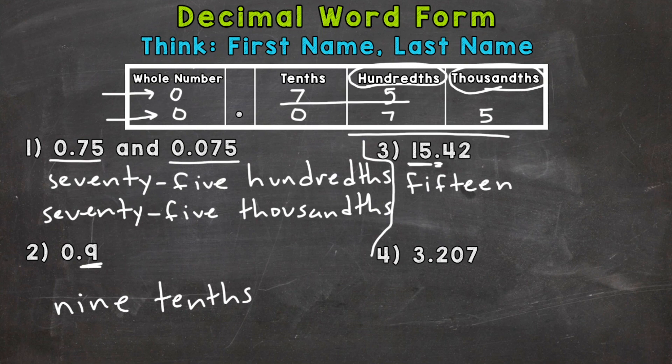Now, when we see this decimal, we need to put the word and. So 15 and that separates our whole number portion from the decimal portion.